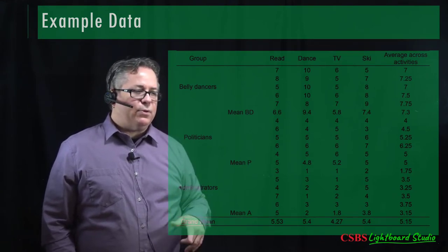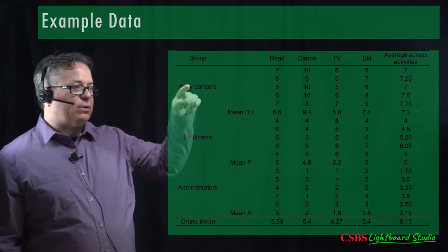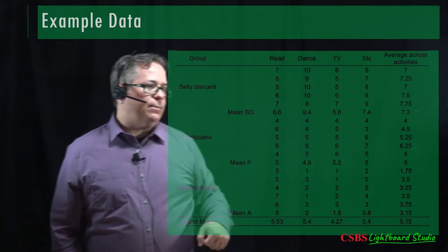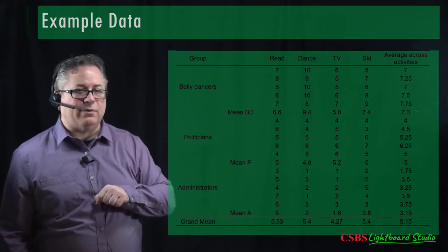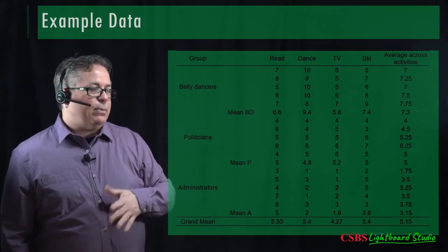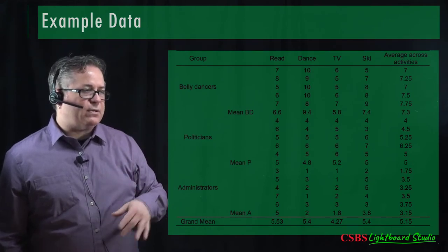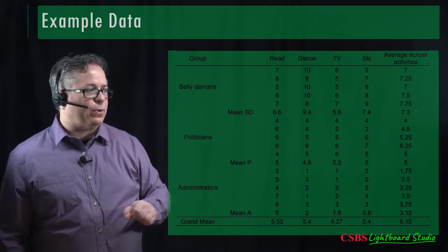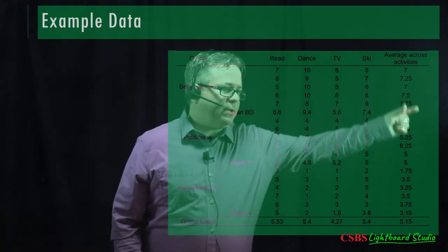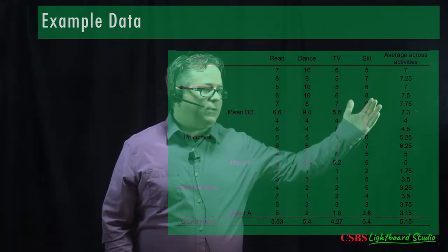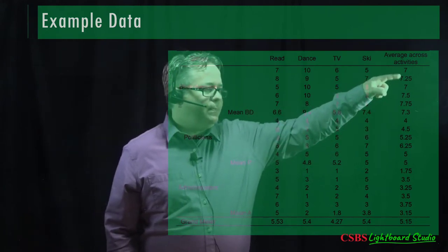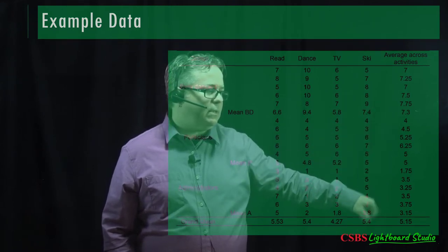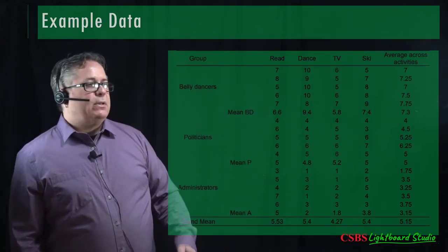If you're thinking about this as a MANOVA, the between-groups part is straightforward — we find a way to weight and combine the DVs to make belly dancers, politicians, and administrators as different as possible, which is what MANOVA does. But now we have more things to test. The easiest is actually the difference between groups, done as a univariate ANOVA using just the averages.